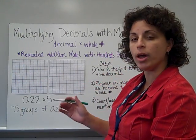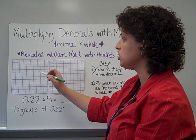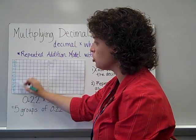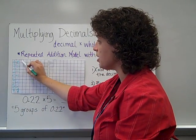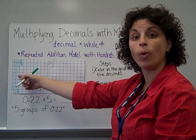So the first thing I'm going to do is color in that first group of 22 hundredths. Well, if this represents one whole, then 22 hundredths would be 22 pieces. There are 10 in each row, so there's 10, 20, and then I would need 1, 2. Well, that was 22 hundredths one time.